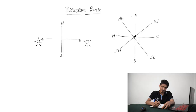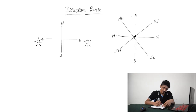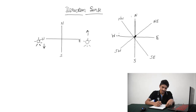Basically, as you know, there are four directions: North, South, East, West. The basic sense you must know is that every time the sun rises in the East and sets in the West. So in the morning, if they say it's morning, the sun rises in the East, and the sun sets in the evening, that is West.